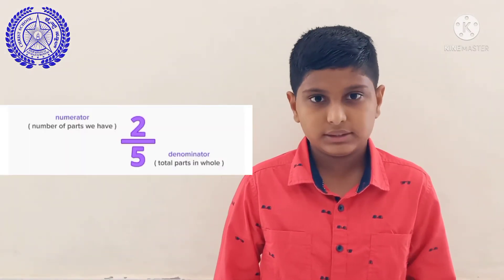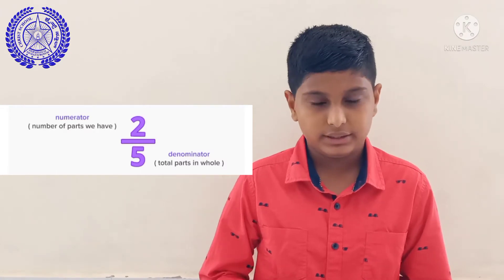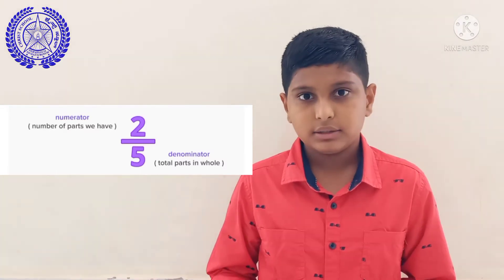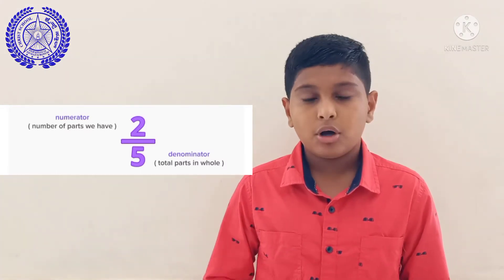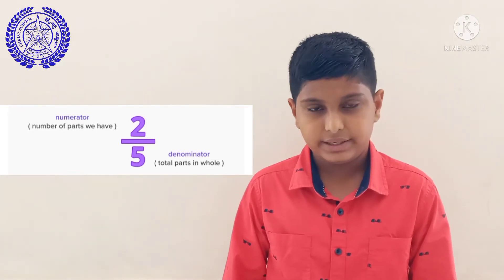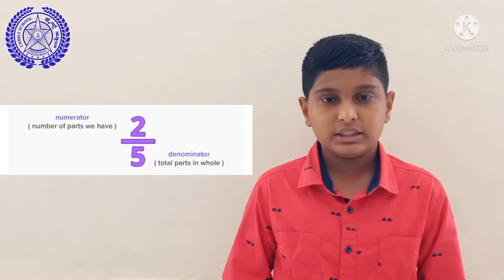Now I would like to explain to you two new words: numerator and denominator. In a fraction, above the line, or the number of parts considered, is known as the numerator, and below the line, or the number of total parts divided, is known as the denominator. There are different types of fractions.